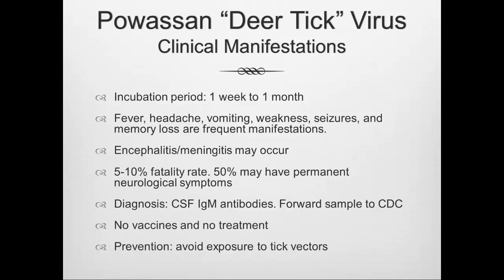Powassan virus, lineage 2, is called the deer tick virus. Its incubation period is one week to one month. Usual symptoms include fever, headache, vomiting, weakness, seizures, and memory loss. Encephalitis and meningitis may occur. It has a 5 to 10% fatality rate — about 1 in 10 persons can die. Fifty percent may have permanent neurological symptoms. Diagnosis is with CSF IgM antibodies forwarded to the CDC. There are no vaccines and no treatment; prevention is avoiding tick exposure.